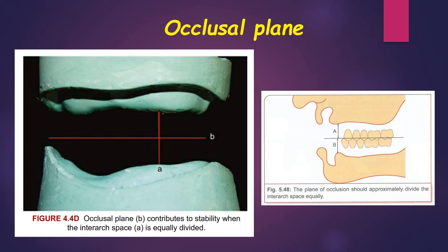Coming to the occlusal plane, it should be oriented parallel to the ridge. If the occlusal plane is inclined, sliding forces may act on the denture and reduce its stability. The occlusal plane should approximately divide the interridge space equally.